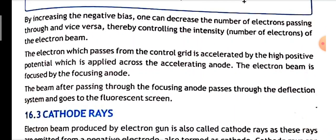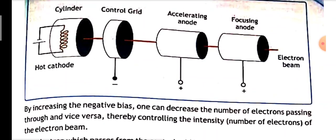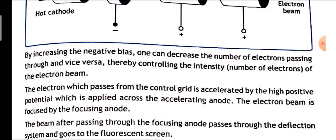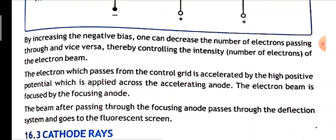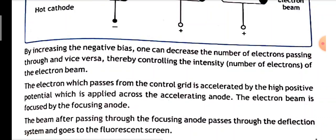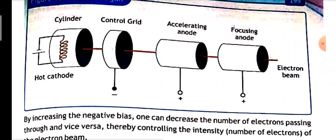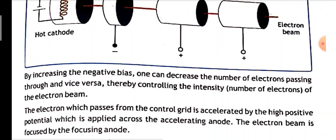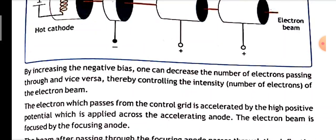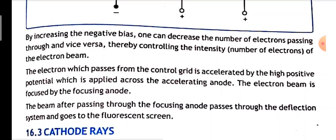The electrons which pass from the control grid are accelerated by high positive potential, which is applied across the accelerating anode. This positive potential increases the electron speed.